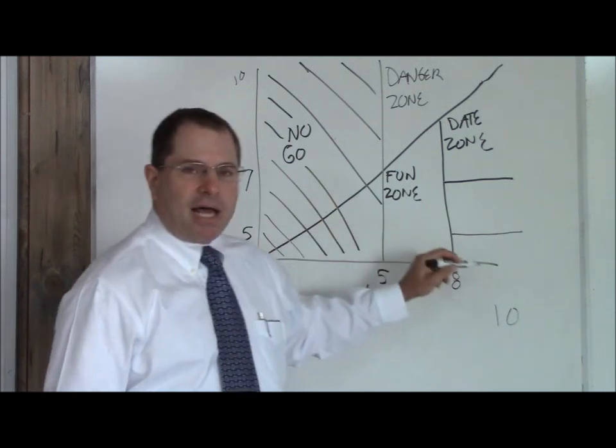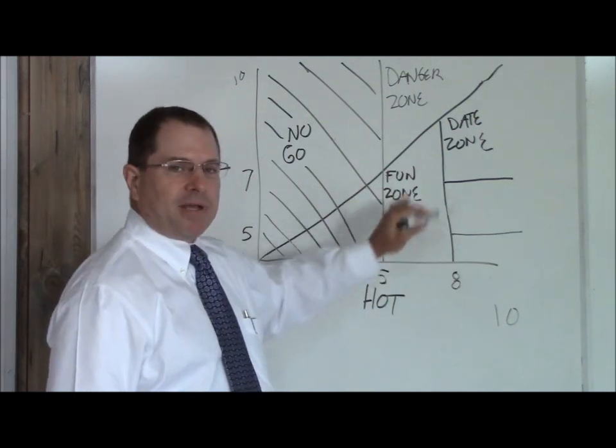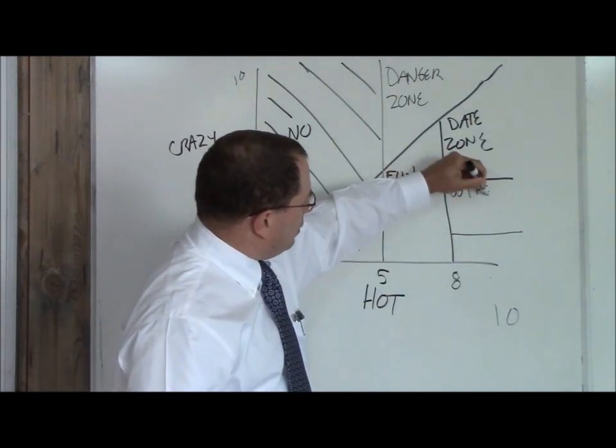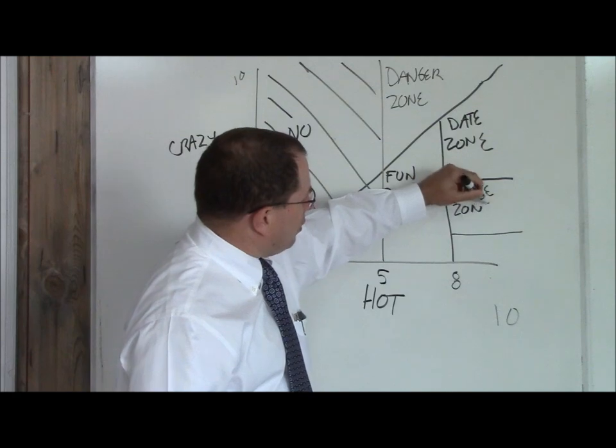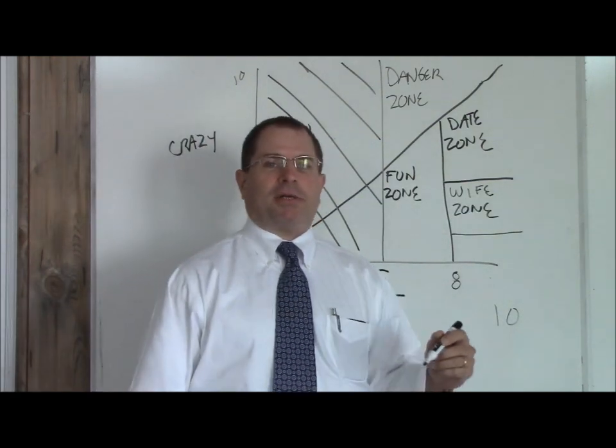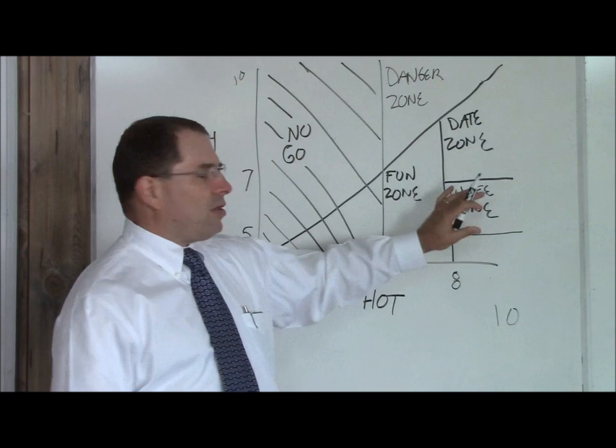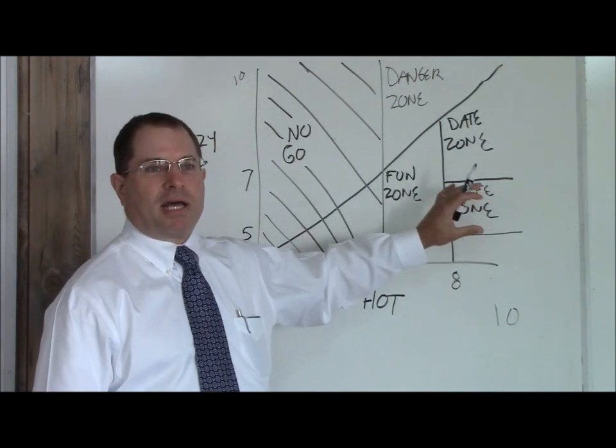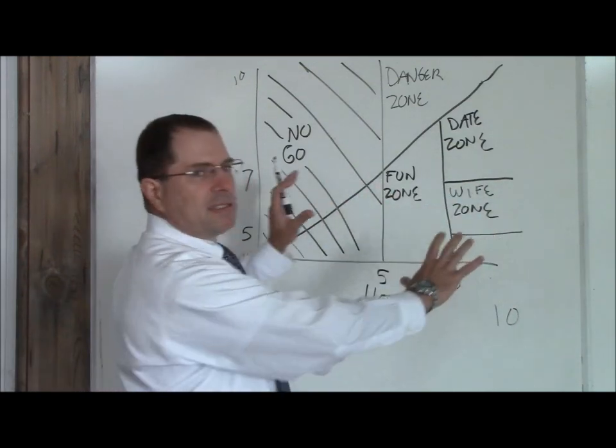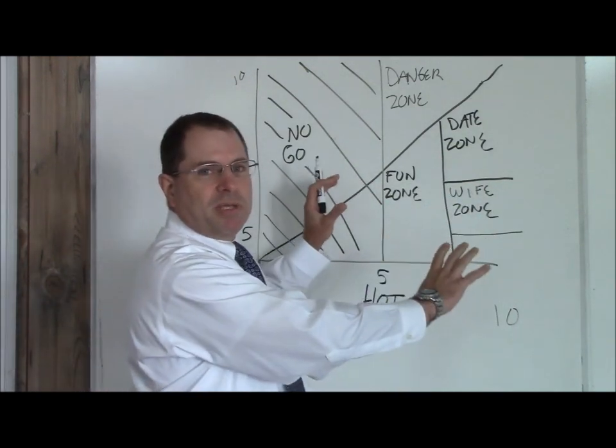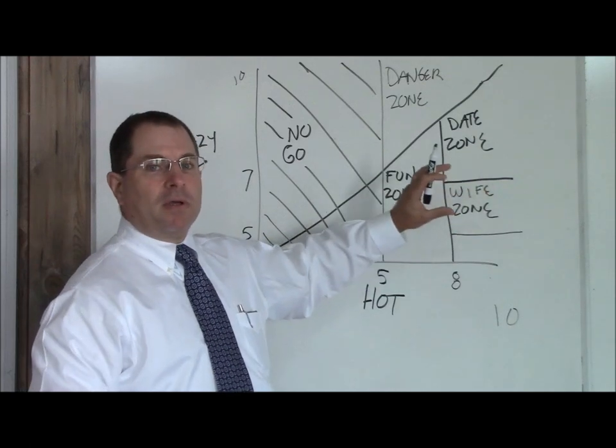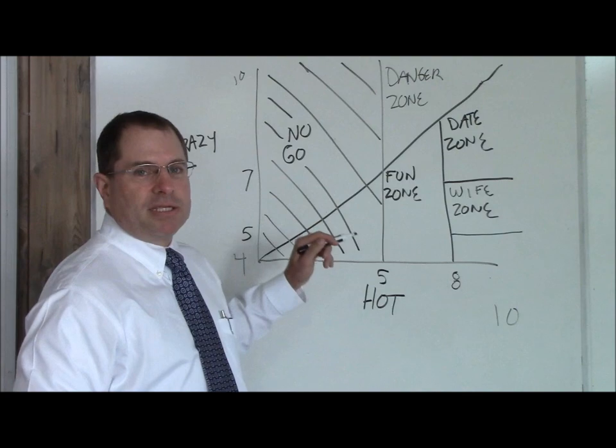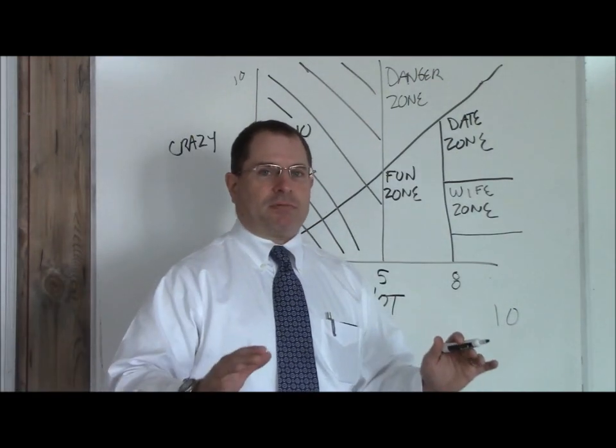Now, above an eight hot and between about a seven and a five crazy, this is your wife zone. When you meet this girl, you should consider a long-term relationship. This zone is not scaled to size. This is a representation and not an actual, this is not a pie chart showing you how many of these people are out there. This is simply a representation of what you're after. You want to be five to seven crazy above an eight hot. That's your wife zone.